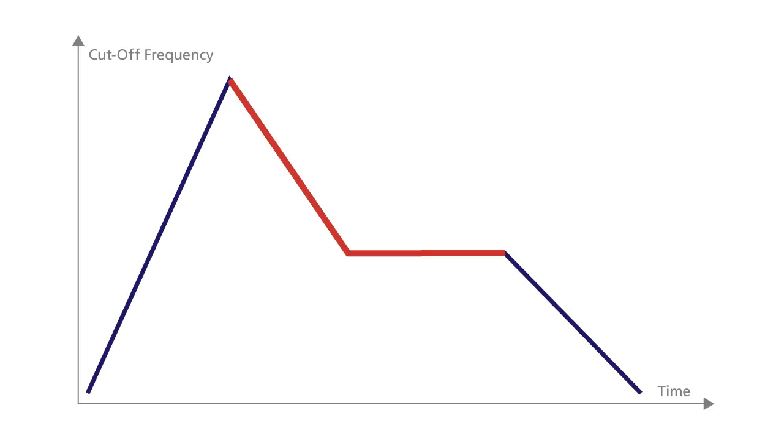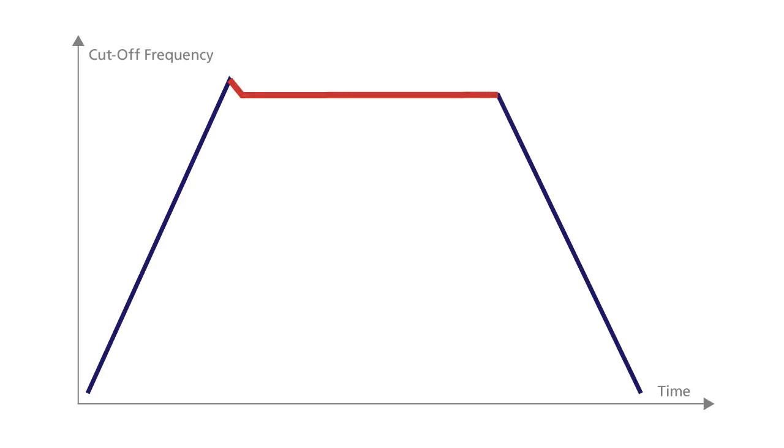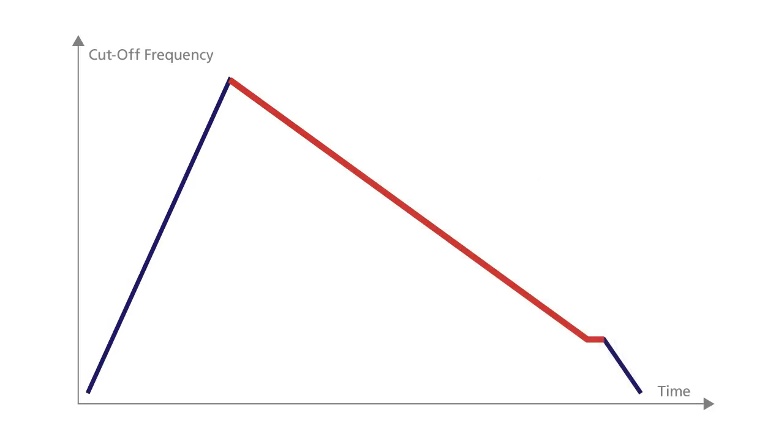Before we move on, you should be aware of the significant interaction between the decay time and the sustain level. When the sustain level is set at a high level, then the decay time has little effect, since the maximum peak at the end of the attack stage and the sustain level are very similar. Equally, if the decay time is set to a large value, then it will take the sound a long time to reach the sustain level, and so the effect of the sustain phase may have less significance for the sound's character.